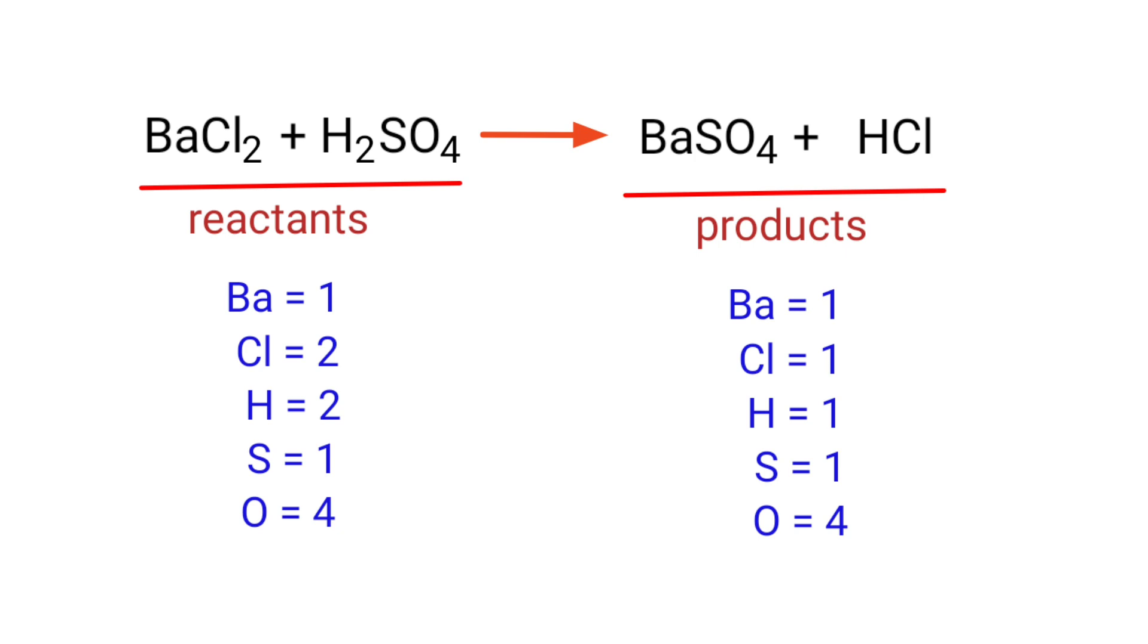The number of atoms are not balanced on both sides. To balance the chemical equation, we need to make use of coefficients. A coefficient is a number that we place in front of a chemical formula.